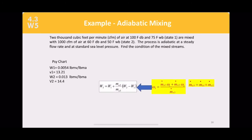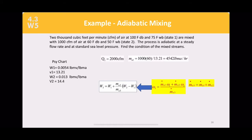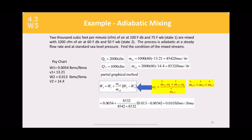Example for adiabatic mixing: 2000 CFM of air at 100°F dry bulb and 75°F wet bulb (State 1) is mixed with 1000 CFM of air at 60°F dry bulb and 50°F wet bulb (State 2). The process is adiabatic, steady flow, at standard sea-level pressure. Find the conditions of the mixture at State 3. This uses the partial graphical method.